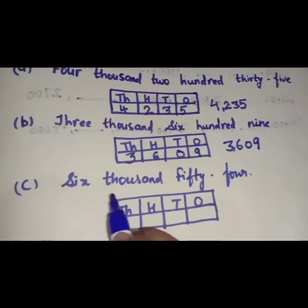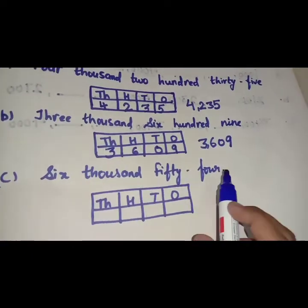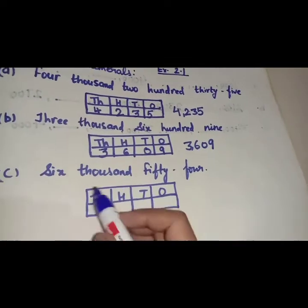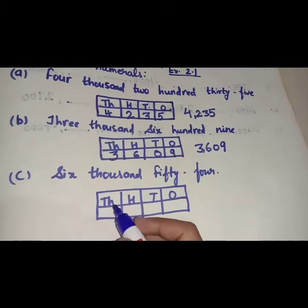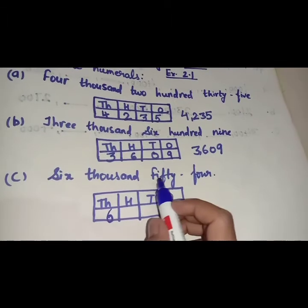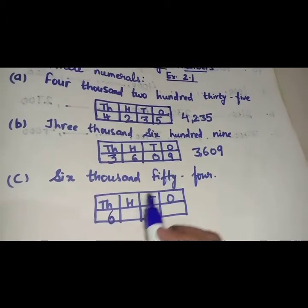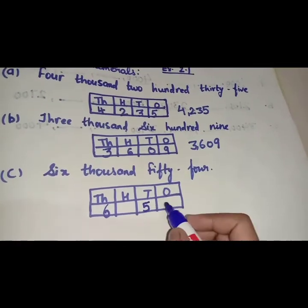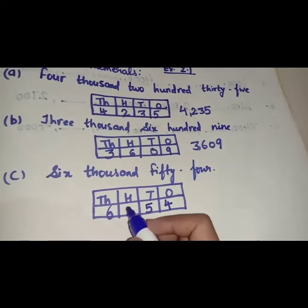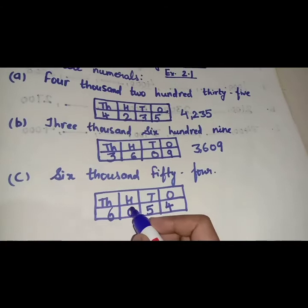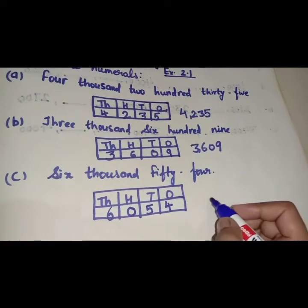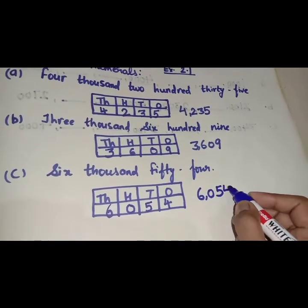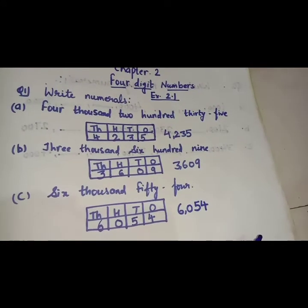Now your next question is 6,054. So again we will make the place value chart. 6 is at the thousands place, so we will write 6 here. There is no value for the hundreds place, so we will leave this place. And 54: 5 is at the tens place and 4 at the ones place. At the hundreds place we will write 0 because we have not been given a value for the hundreds place. So here is our number 6,054 — these are the numeral forms of this number.